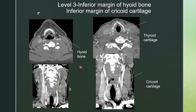Level 3 lymph nodes need to be below the margin of the hyoid bone and above the inferior margin of the cricoid cartilage. Here's the hyoid bone that looks like a wishbone. Here's the thyroid cartilage for reference, and here's the cricoid cartilage posterior to the thyroid cartilage and slightly inferior. Level 3 lymph nodes should be below the hyoid, above the inferior margin of the cricoid cartilage, and adjacent to the carotid sheath.